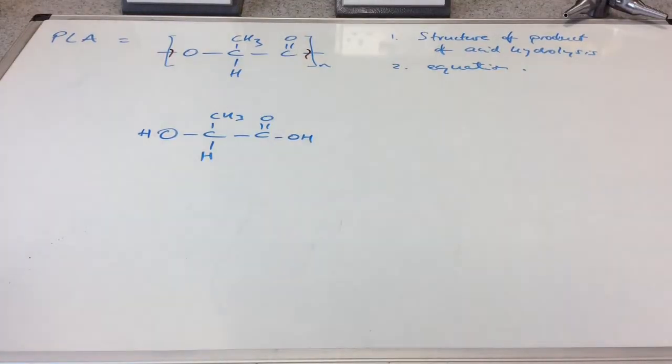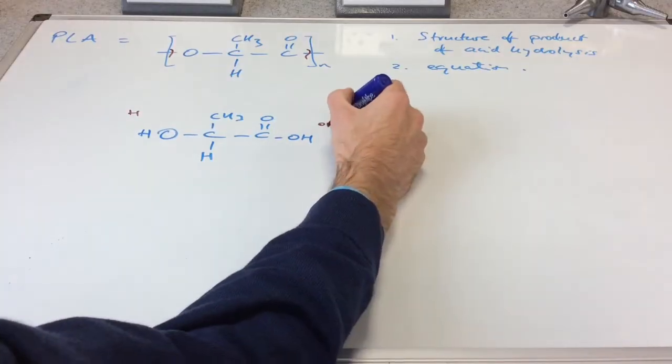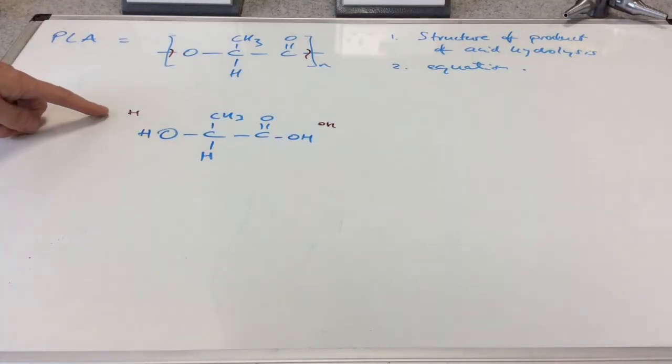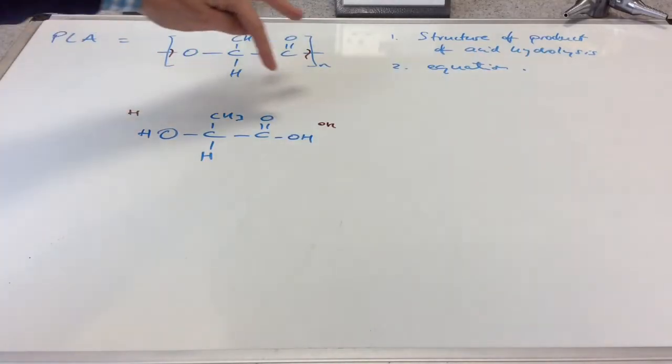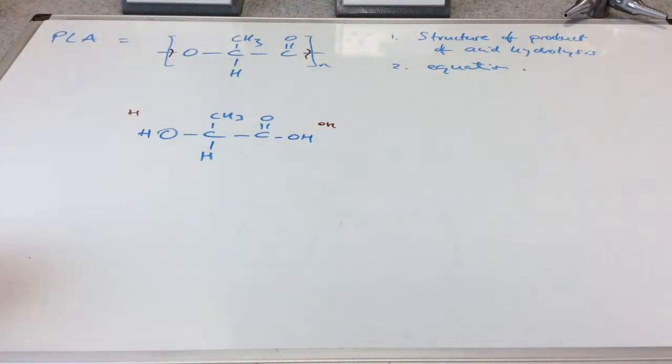How have we done that? Going from this to this we've added just an H on this end. Going from this to this we've added an OH. So effectively for each repeat unit we've needed an H and an OH, which in other words is a water molecule.